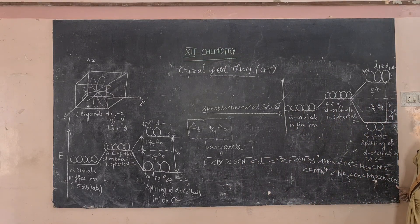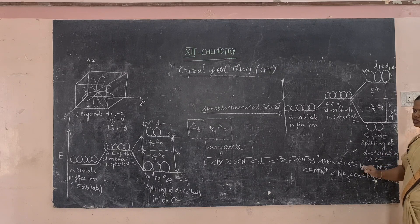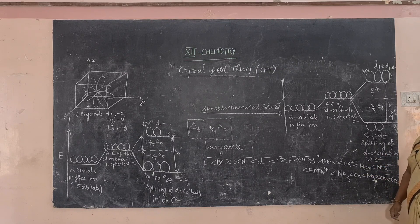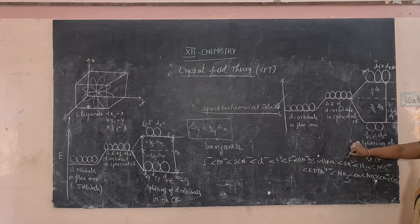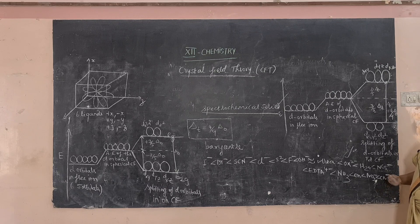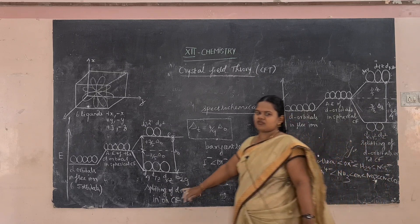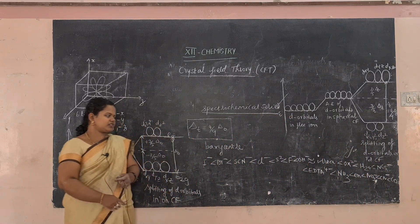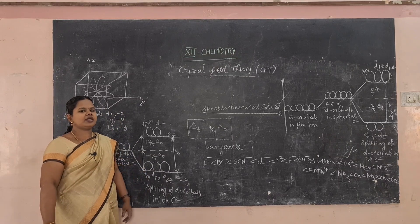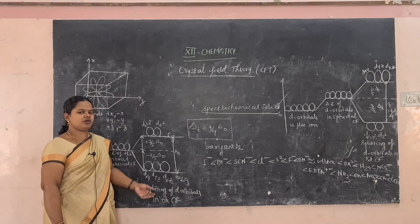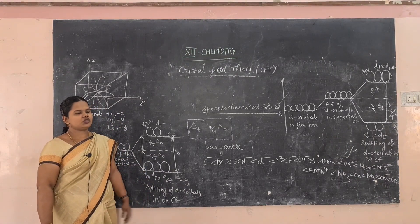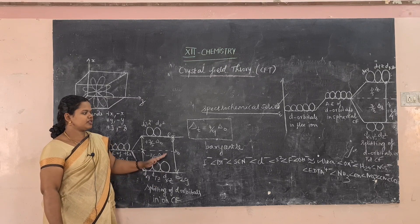Carbonyl (CO) causes the largest crystal field splitting compared to all other ligands in this series. This is the spectrochemical series — you must learn it. Only then can you determine whether the splitting is higher or lower. Strong field ligands are on one side and weak field ligands are on the other side.